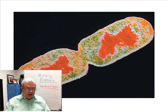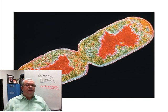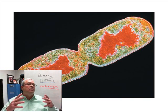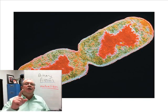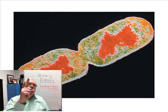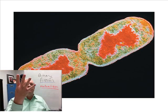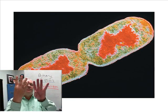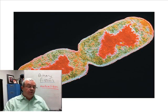Under ideal conditions — which is plenty of food, room to grow, nice temperature — one bacteria cell can become two bacteria cells every twenty minutes. Start with one, and after twenty minutes you have two, after forty minutes you have four, after an hour you have eight, et cetera. They can reproduce very, very rapidly.